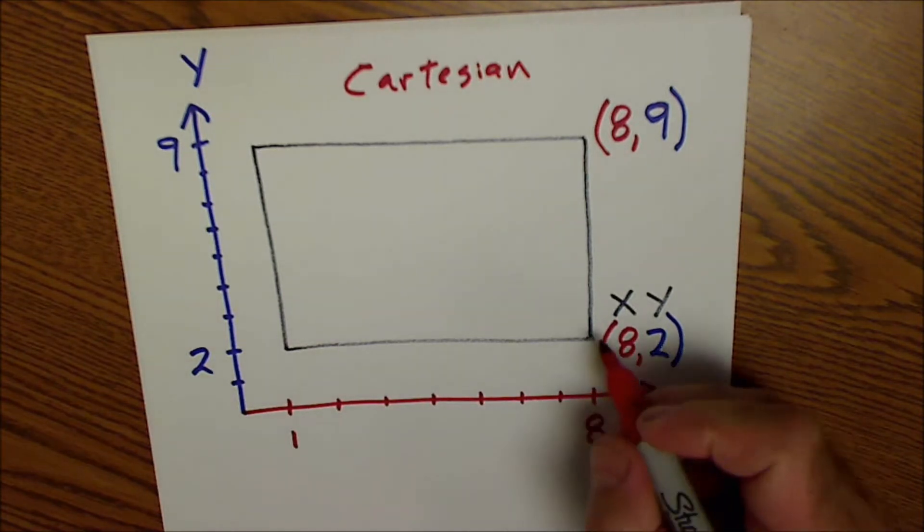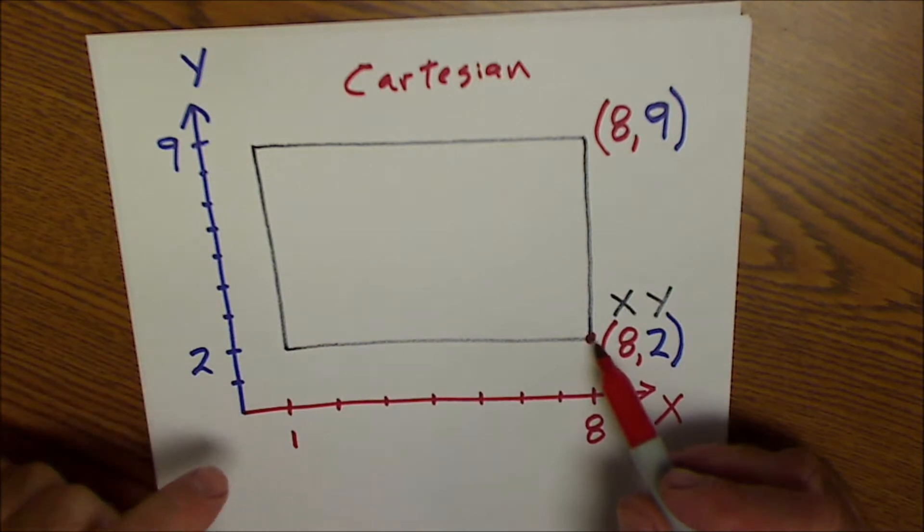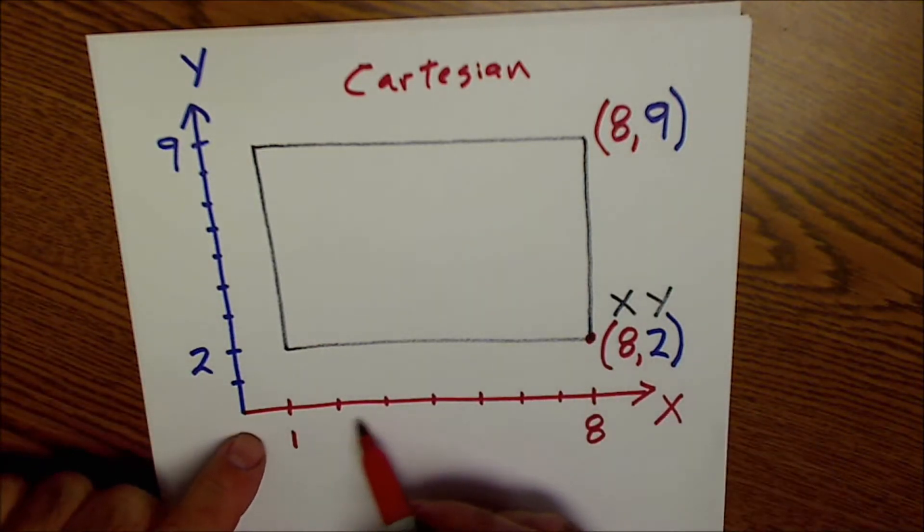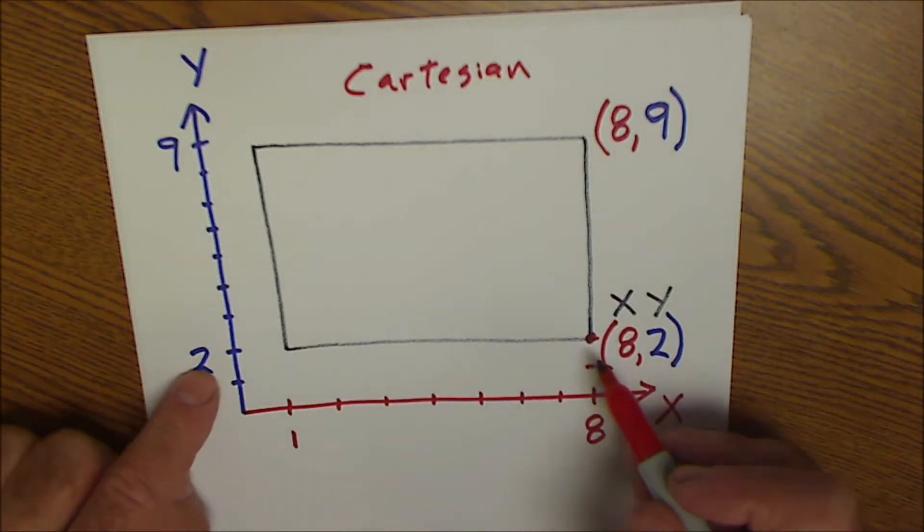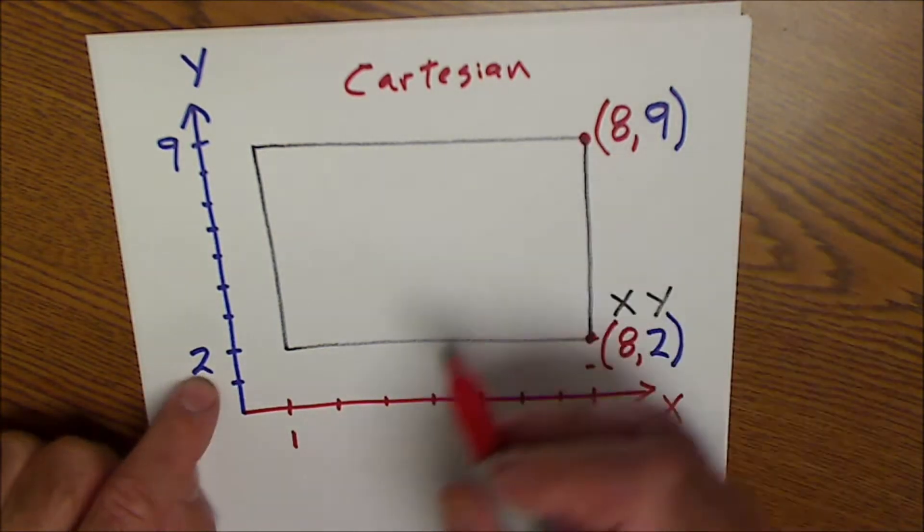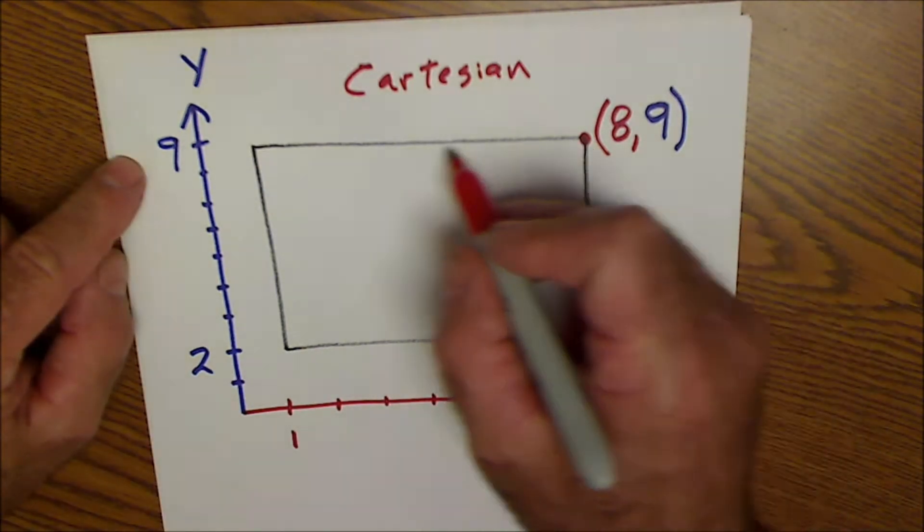So this coordinate right here in the lower right hand corner of this rectangle is 8 because I go over 8 units and then I go up 1, 2 units. So it's over 8, up 2. This coordinate right here is over the same amount, 8, however now it's up 9.